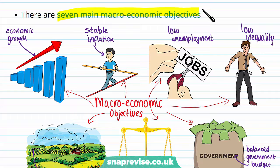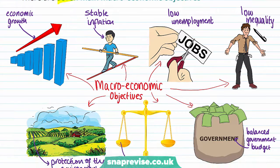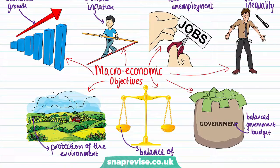The first is economic growth — we can measure this in terms of GDP. Second is stable inflation, maintaining a stable price level. Third is low unemployment, ensuring plenty of jobs exist. Fourth is low inequality, ensuring a fair distribution of income. Fifth is a balanced government budget, avoiding overspending. Sixth is the balance of payments, ensuring stability between money leaving and entering the country. And seventh is the protection of the environment for longevity and sustainability.